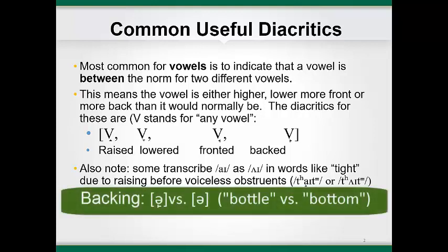An example of backing might occur in words where a vowel occurs before a dark L. The velarization tends to pull the vowel back somewhat. In the case of schwa, it might make it sound more like UH. Listen to these examples: bottle versus bottom. Can you hear the difference in the pronunciation of the schwa in 'bottle' being a bit further back than the schwa in 'bottom'?